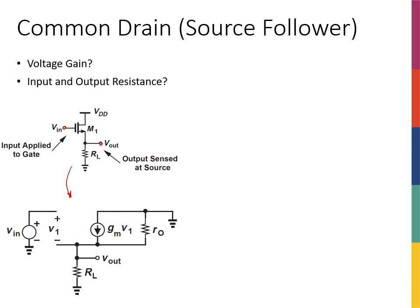Here, I have VIN connected to the gate. I have VGS, GM·VGS, R0, and RL. The fact that I have R0 in the circuit means that lambda is not zero and I do have channel length modulation. If I did the gain calculation and wanted to know what will happen without channel length modulation, I just have to make R0 equal to infinity in that expression.